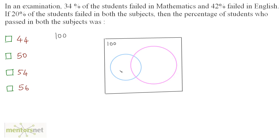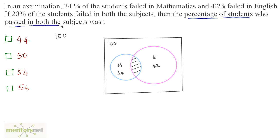Out of these 100 students, those in the blue circle are the students who failed in mathematics — those are 34 in number. And in the pink circle are the students who failed in English — those are 42 in number. These two circles overlap, which means there are students who failed in both subjects.